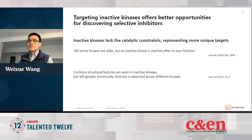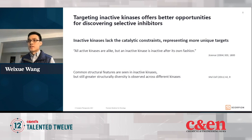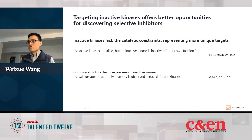So screening small molecule libraries against the active kinase uses mostly non-selective inhibitors that bind to the highly conserved ATP binding pocket. Targeting inactive kinases instead actually offers better opportunities for finding selective kinase inhibitors, because inactive kinases don't have the catalytic constraints and each of them can be inactive in a different way. Therefore they represent more unique targets.